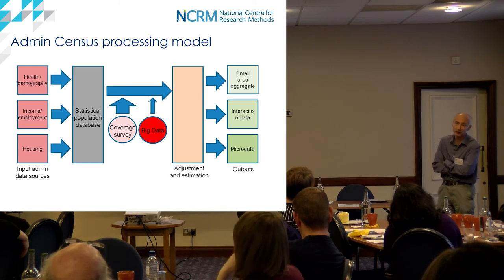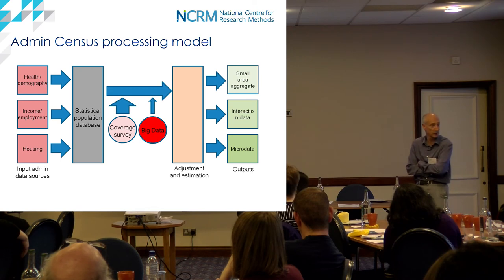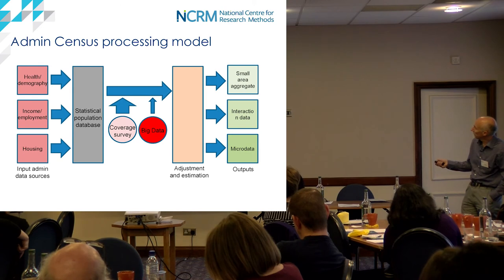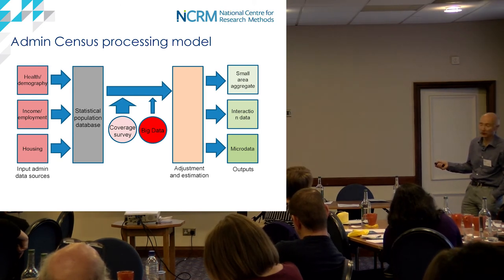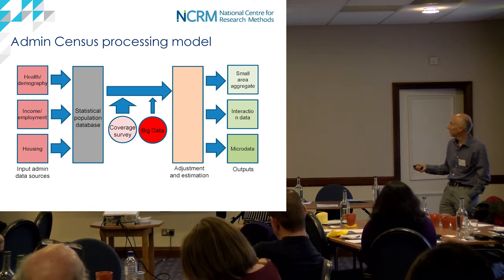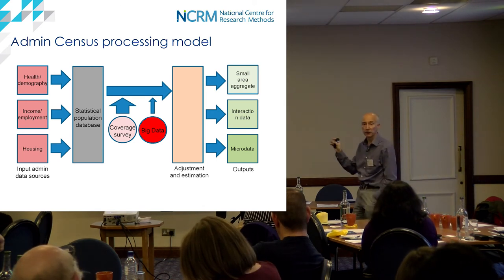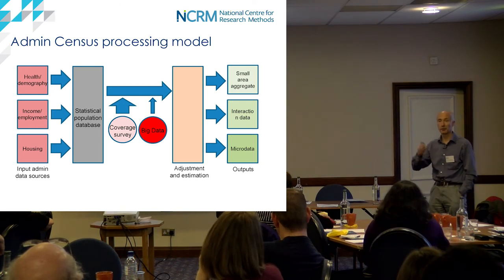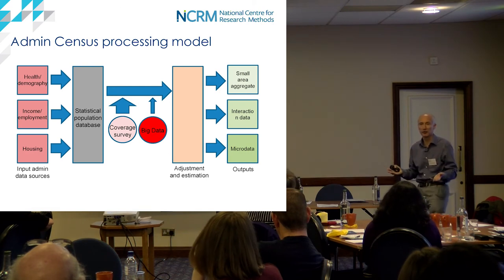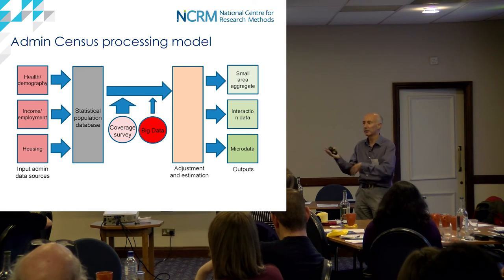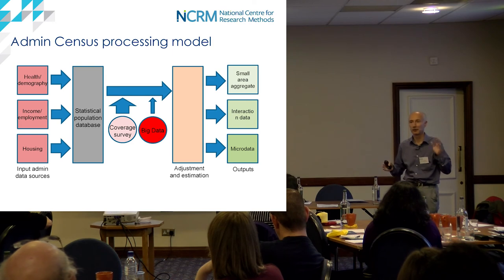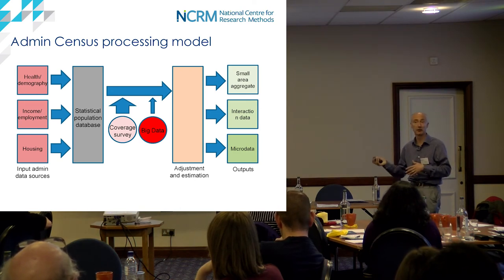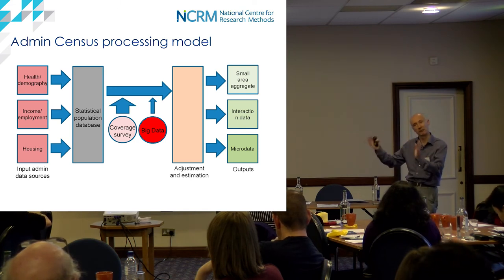Here's the admin census model: no standard enumeration on the left-hand side, just a variety of linked admin datasets, all brought in and linked in the statistical population database. Interestingly, this is probabilistic - it can have half a person at their term-time address and half at their home address. I can also foresee big data coming in where the admin data was being used for checks. But importantly, there is no route here that doesn't involve a coverage survey at least as big as the one in the 2011 model.